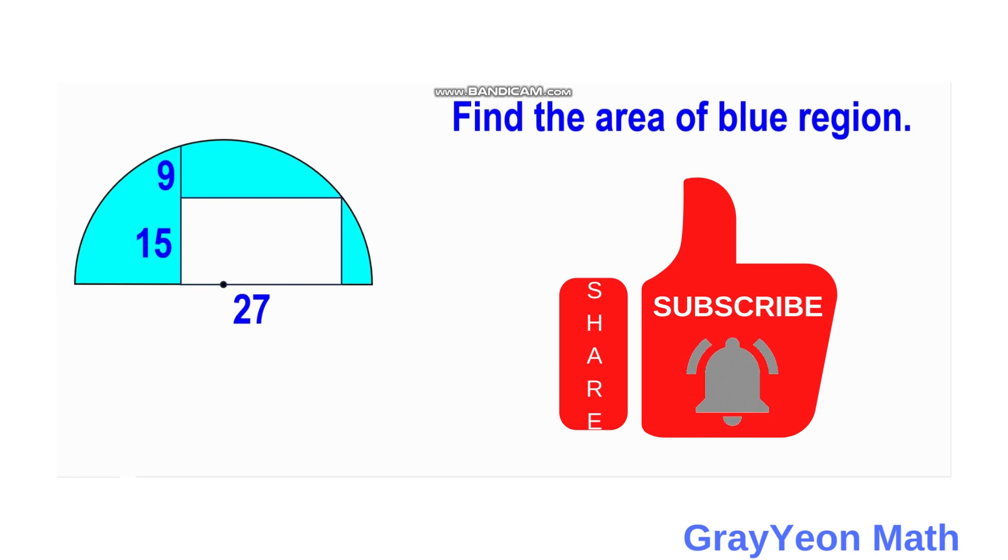This wide square has dimensions of 15 and 27 units for the height and the length respectively. This rectangle has one vertex which is 9 units from one point on the circle. And we are required to find the area of the blue region.